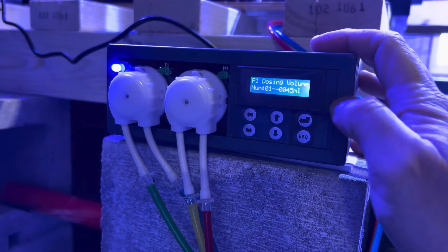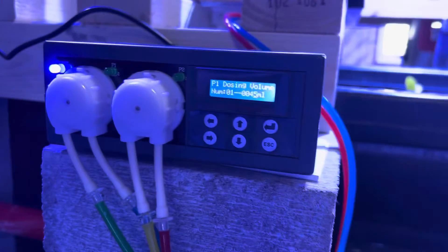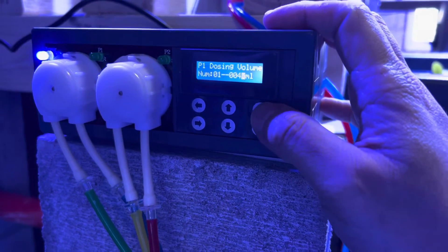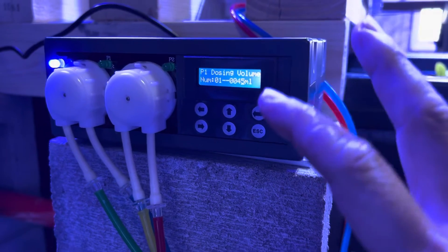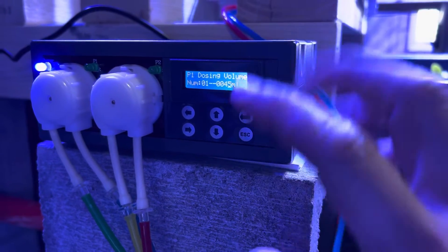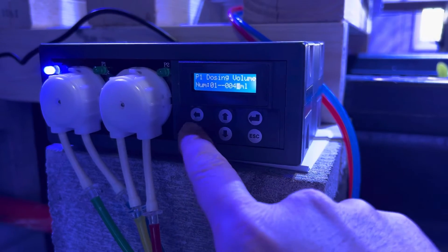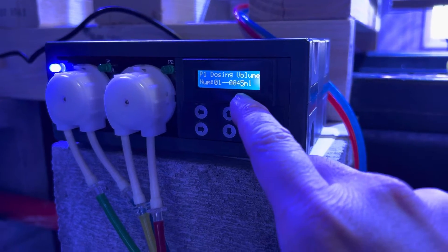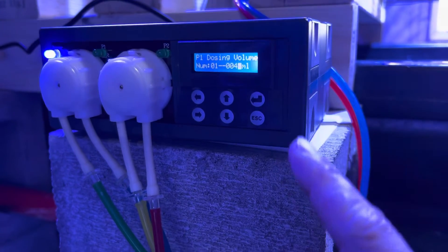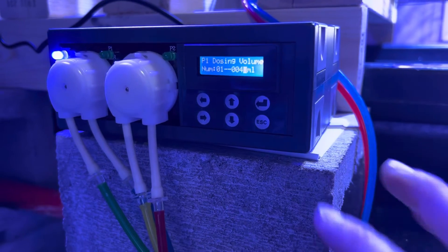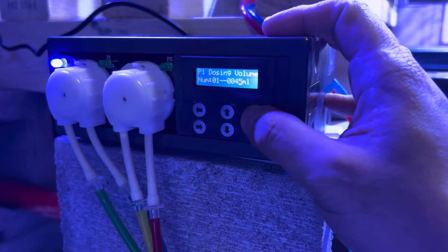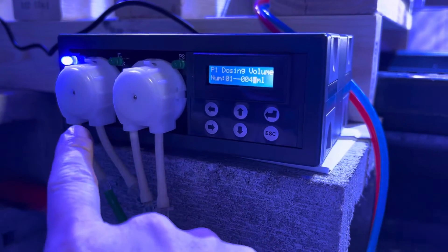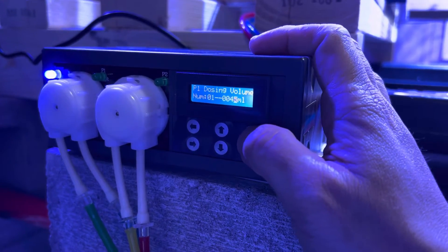And then this is the part that kind of screwed me over: dosing volume. Bear in mind, those of you who are not working in laboratory or chemists or familiar with the metric system, this is in milliliters. For pump one, remember, I set it for 24 times a day and for 45 milliliters each time. So that's 45 times 24, somewhere between 450 to 500 milliliters. About half a liter a day is going to go out in pump one. I'll press enter.